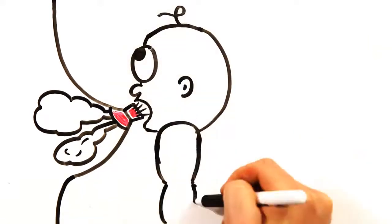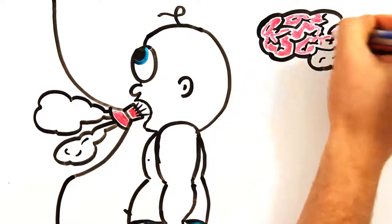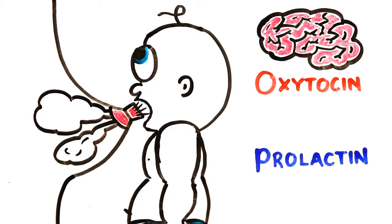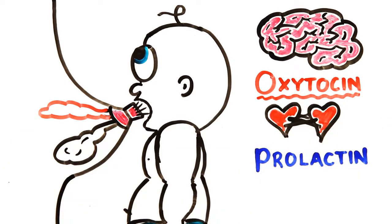After having a baby, receptors in the nipple detect when the baby begins to suckle, sending messages to the mother's brain, causing a release of oxytocin and continued production of prolactin. Oxytocin causes the cells that line the mammary glands to contract, and is also known as the cuddle hormone as it enhances the bonding experience between mother and child.